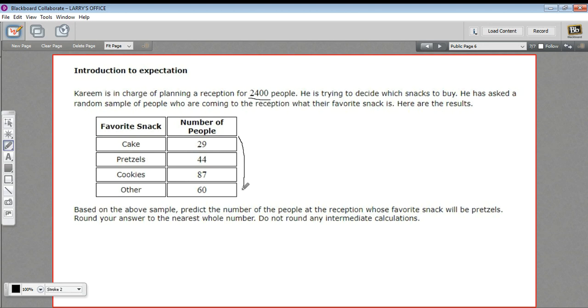I added these up, and the total number of people he asked was 220. We'll need to know that because we want to make a proportion here, and we need to know the total. In this case, we've got 29 who like cake, 44 who like pretzels, 87 who like cookies, and 60 who like something else.